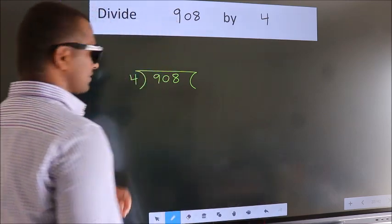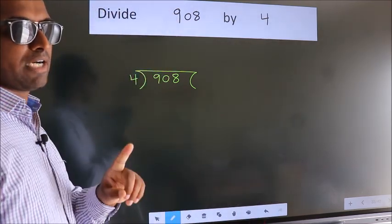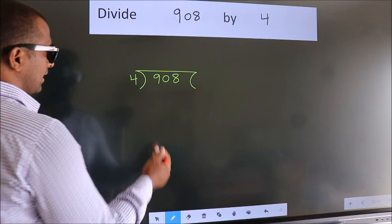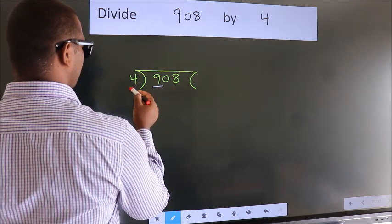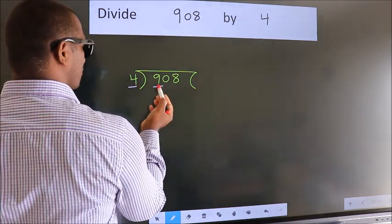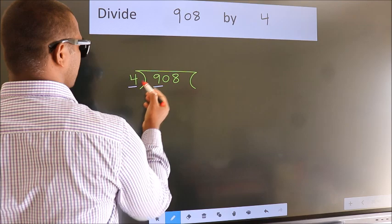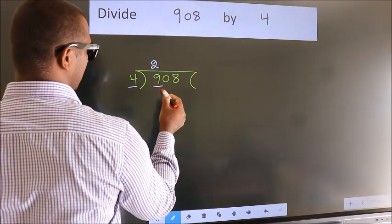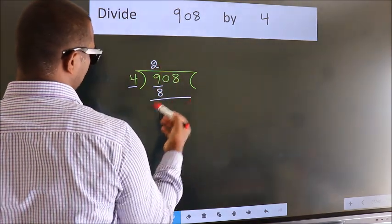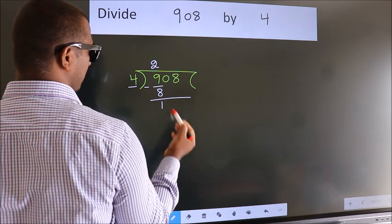This is your step 1. Next, here we have 9, here 4. A number close to 9 in 4 table is 4 twos, 8. Now, we should subtract. We get 1.